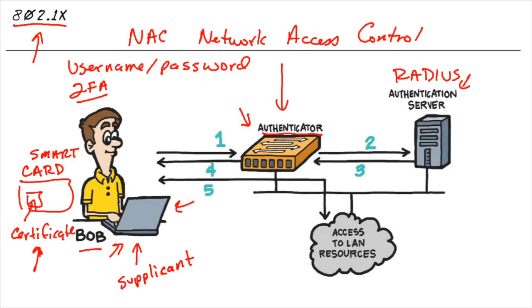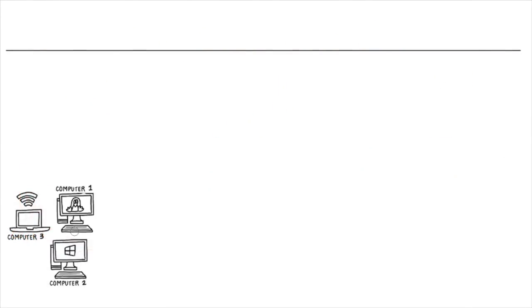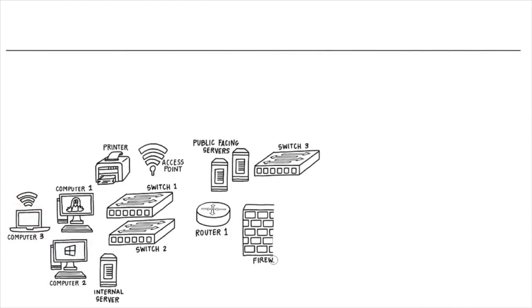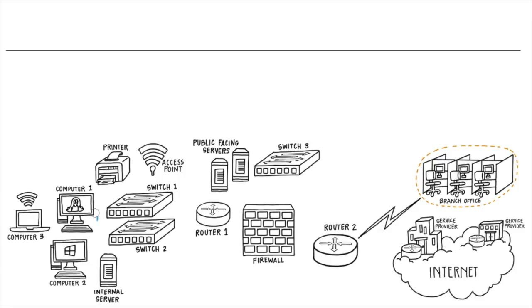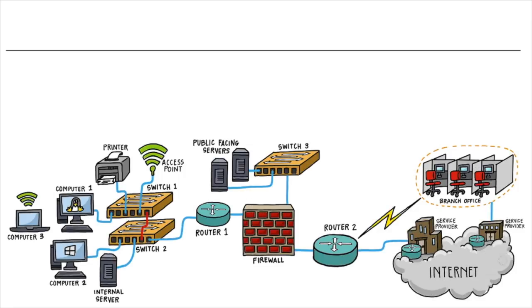And 802.1X can be used in combination with other functions and features. For example, if we're looking at our logs and we see that there are specific MAC addresses that have been trying to get in or access our network, we could set up MAC filtering that would prevent specific MAC addresses from getting access into the network — on wired networks or on wireless. The concept presented by 802.1X of stopping an individual and validating them before we let them continue is a great concept to help us enforce security and access control.